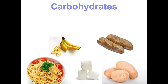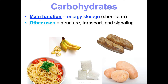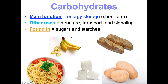First are carbohydrates. Their main function that we tend to think of them for is energy storage, specifically short-term. Think of them as our easy-to-access energy — when your body needs energy, carbs are going to be the go-to. They also have structural uses, uses in transporting things, and in signaling and recognition. Where do we find them in food? They come in sugars and starches — not just table sugar, but sugars in fruits and vegetables and starches as well.